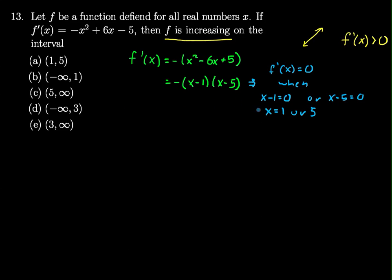So now we have a few choices to figure out where it's positive, but I know that if I look at the graph of this function, we're going to get a 0 at 1 and we're going to get a 0 at 5.